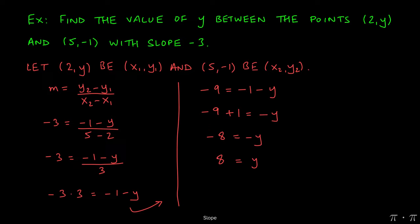So what this means is if the value of y is 8, then the slope of the line (2, 8) and (5, -1) will be -3.